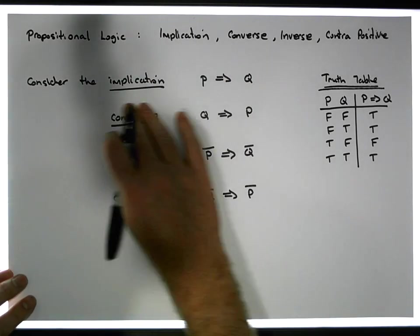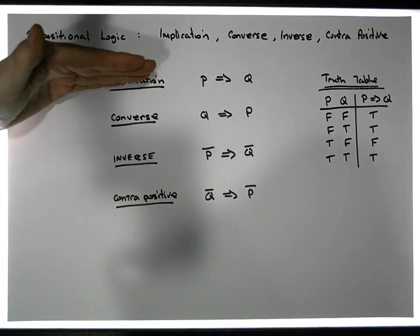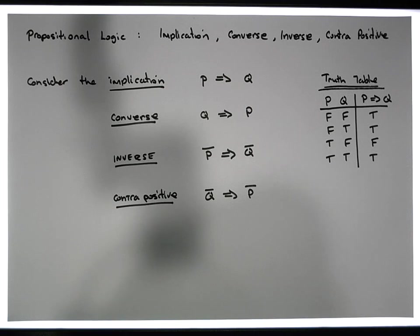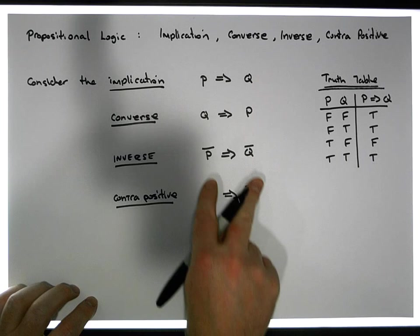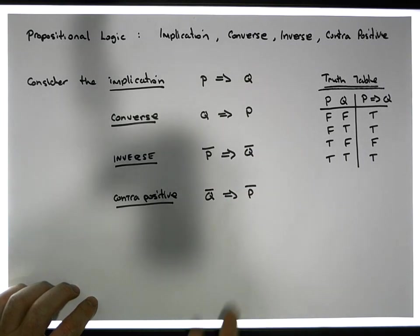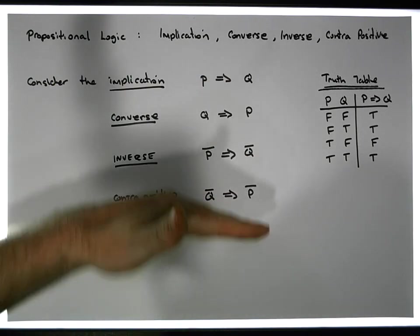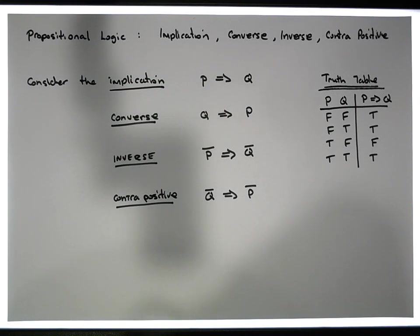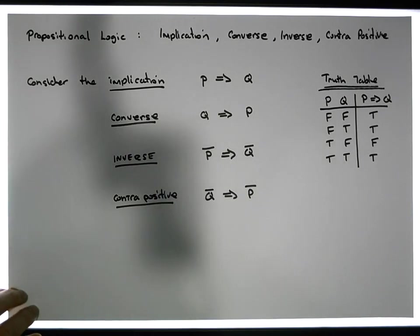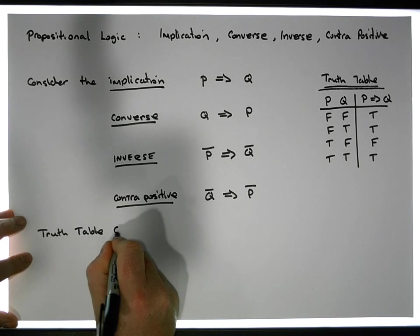So what we have now is four implications — the original plus three new ones — all based off the original implication. We've moved the premises and conclusions around and negated them. Now, from an argument perspective, some of these statements are equivalent to each other and some aren't. So let's consider the converse and build its truth table.